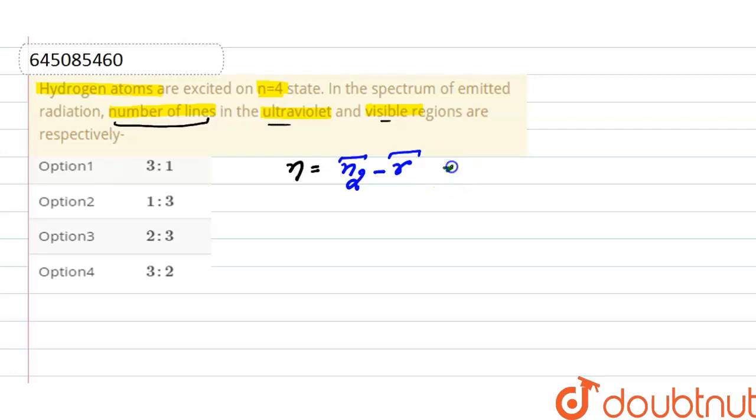For the ultraviolet region, ultraviolet rays appear in the Lyman series, and for the Lyman series, the value of r is 1. For the Balmer series, the value of r is 2, and so on.